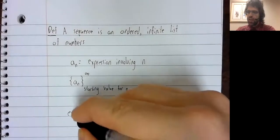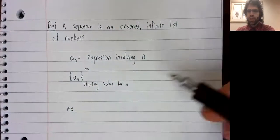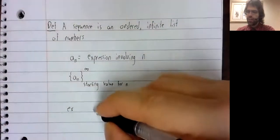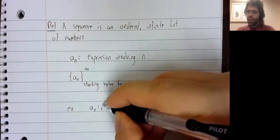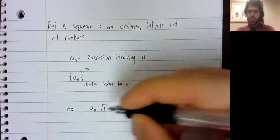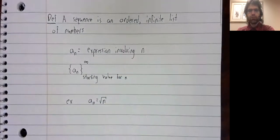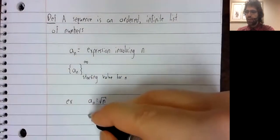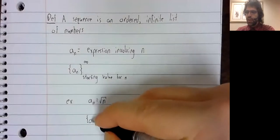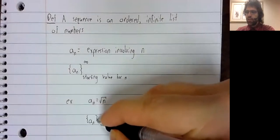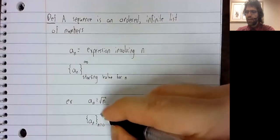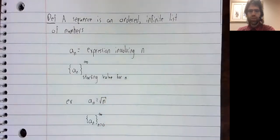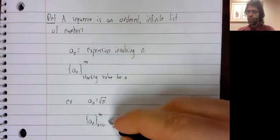As an example to clarify this, maybe a sub n is the square root of n. And then you look at the sequence from n equals zero to infinity.